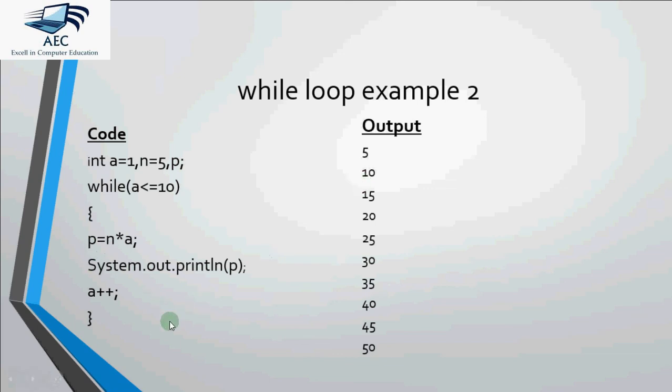Then a becomes 3. So 3 less than equal to 10 is true. It prints 15. Then for 4, 20. And so on till a reaches 10. When it is 10, 5 into 10 is 50. It prints 50 on the screen. a++ will make it 11. 11 less than equal to 10 is false. Since the condition is false, it stops over there. And the thing which we get printed on the screen is numbers from 5 to 50, that are first 10 multiples of 5.